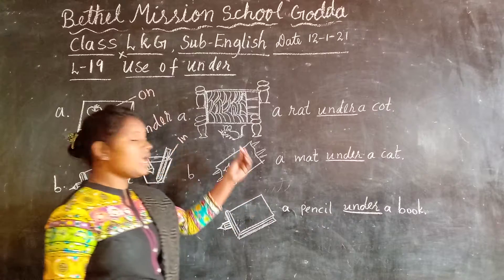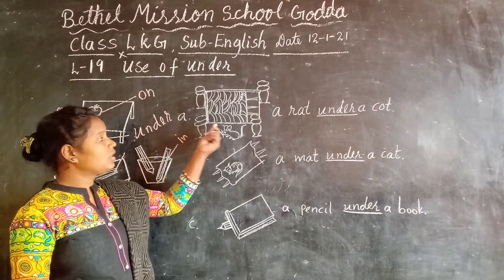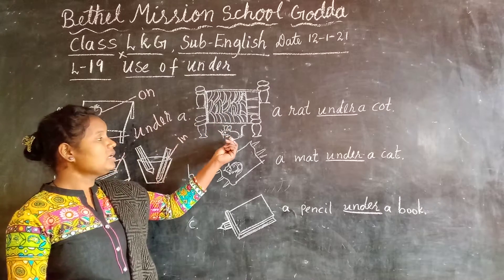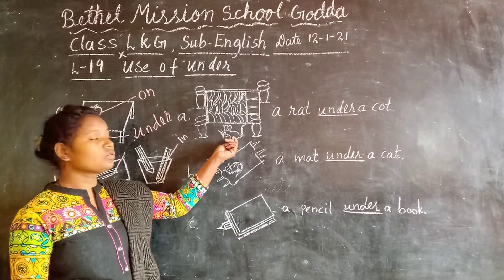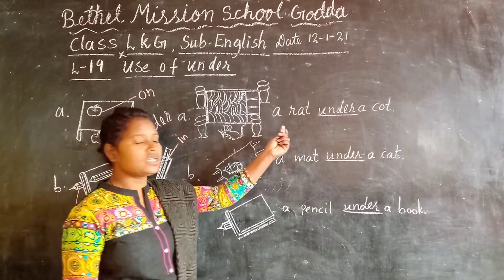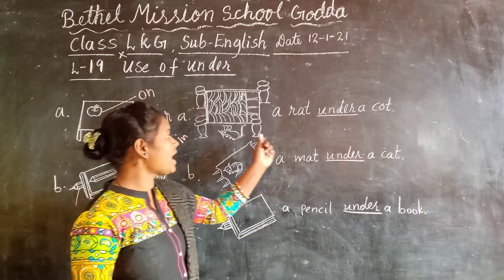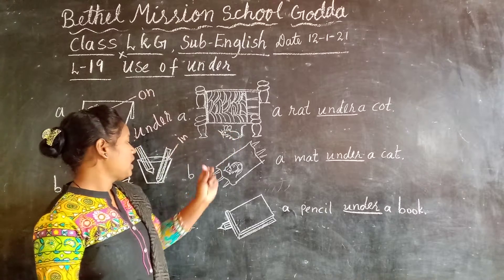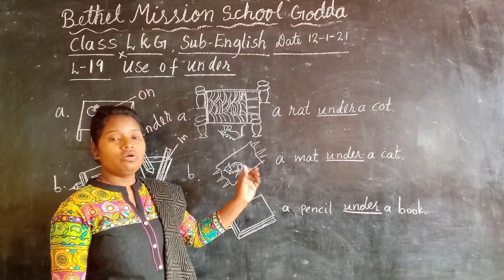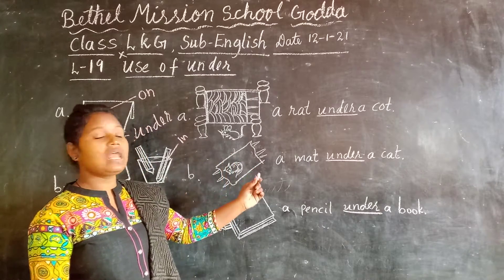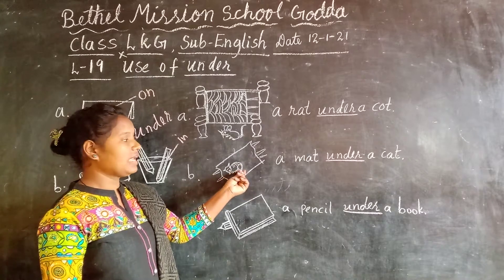Here some sentences I have written with the pictures also. See number one — one coat and a rat. So where is the rat? Rat is under the coat. And next one — where is the mat? You don't have to tell where is the cat, you have to tell where is the mat. So mat is under the cat.